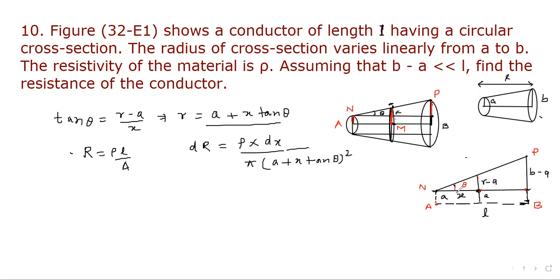Also, if we find tan theta from this triangle, perpendicular and base, tan theta will be equal to b minus a divided by l. In terms of tan theta, we can write b minus a upon l. So, dR will be equal to ρ dx divided by π times a plus x times b minus a divided by l whole square.